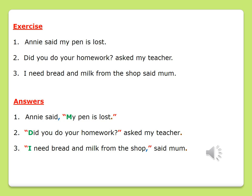Our third sentence: "I need bread and milk from the shop," said mom. What did mom say? "I need bread and milk from the shop" — so that sentence goes within our red quotation marks. We have a comma before the end of the quotation marks to separate the sentence, and we have a capital letter I at the beginning of the sentence. Did you get this right? Did you understand how to punctuate it correctly? I hope you did.